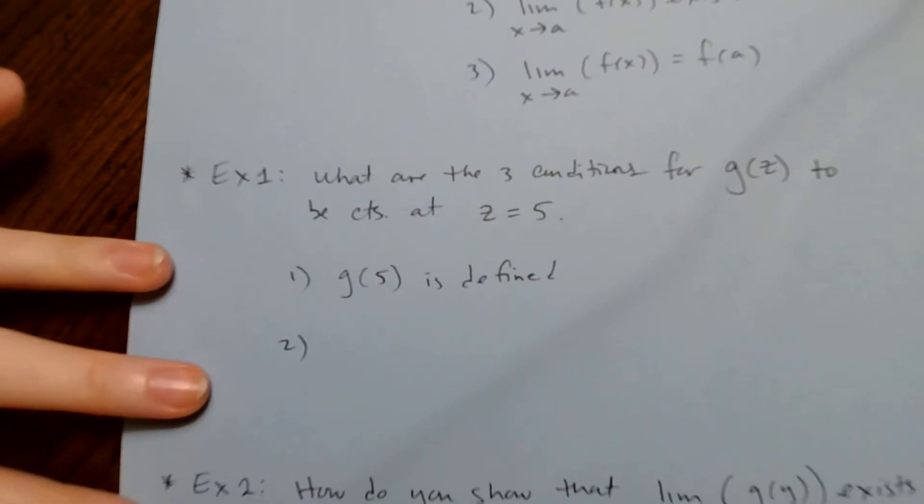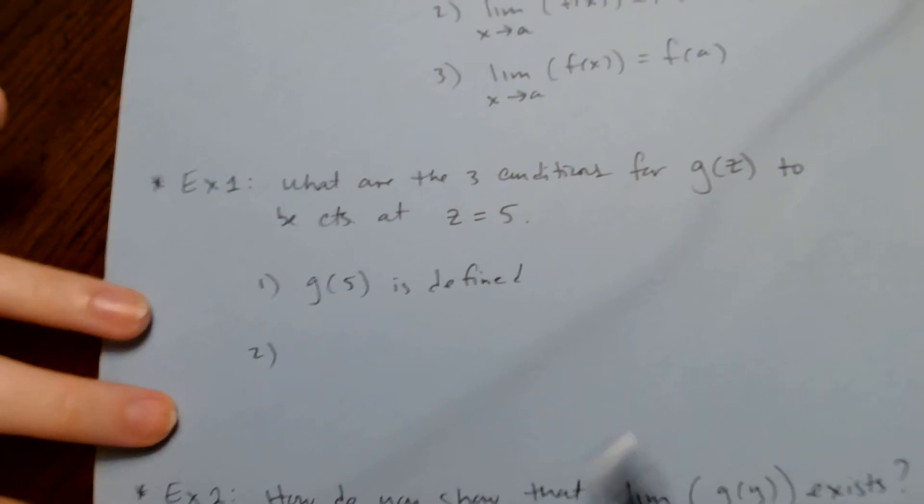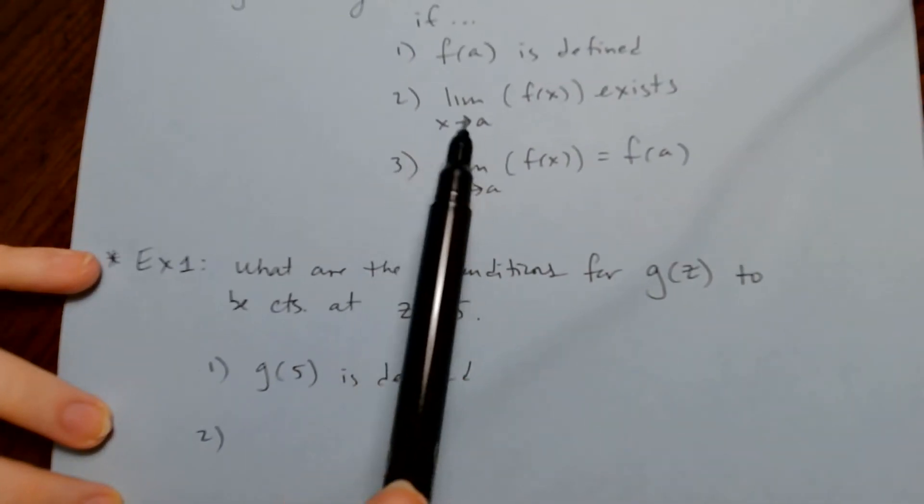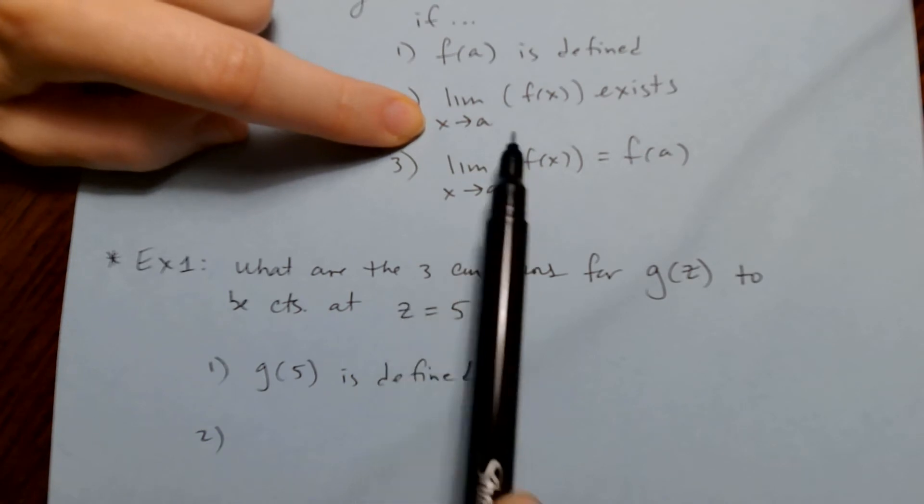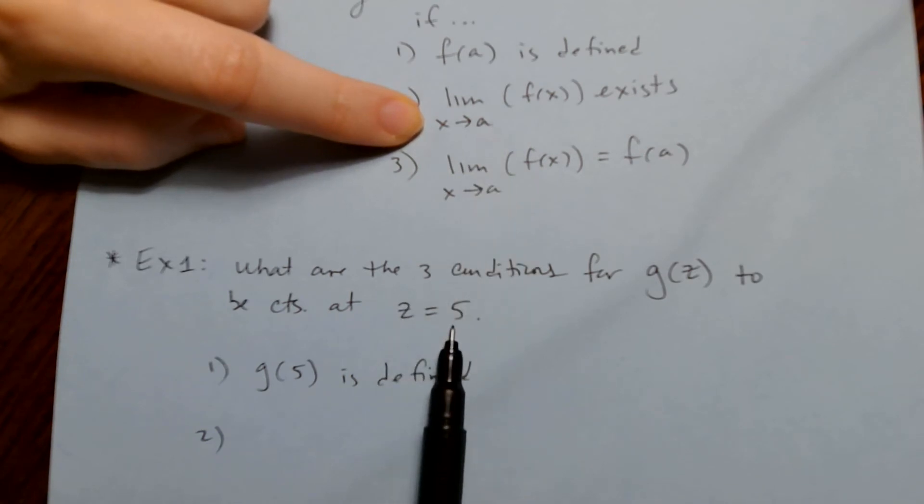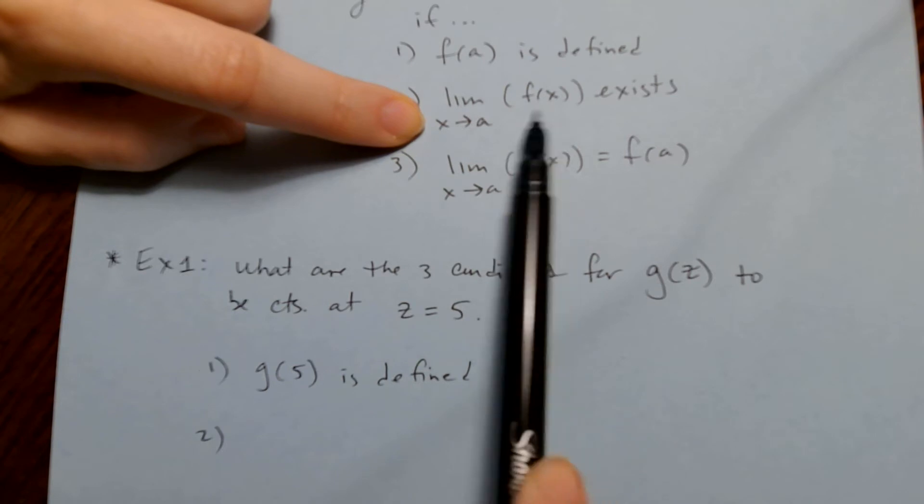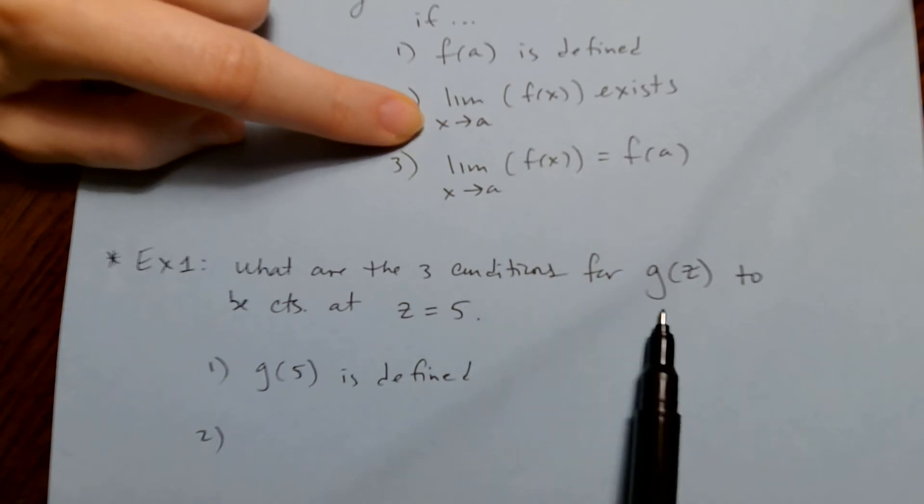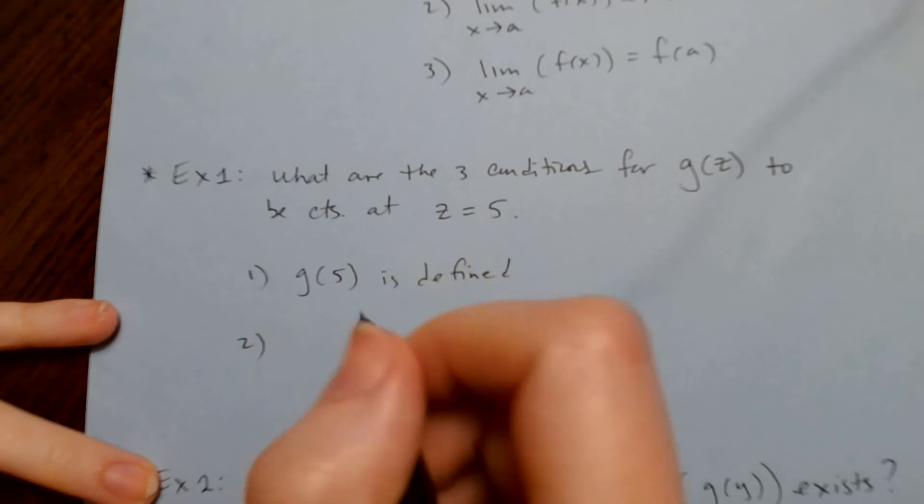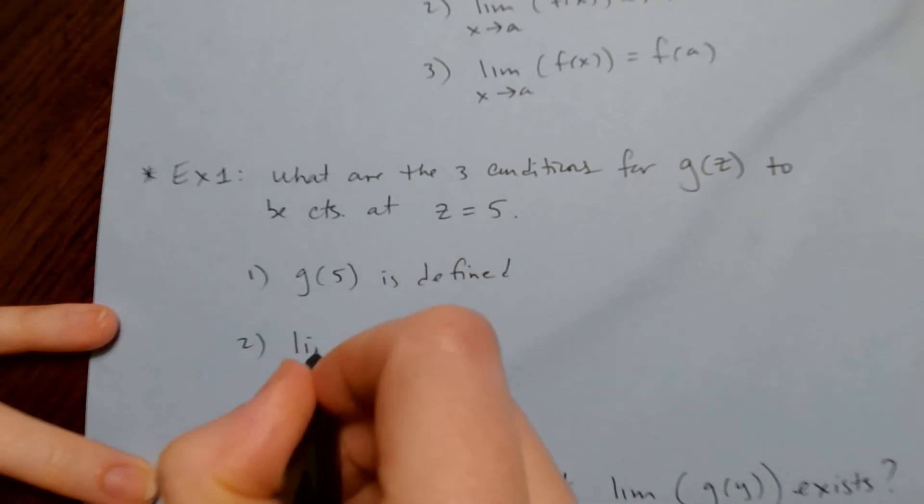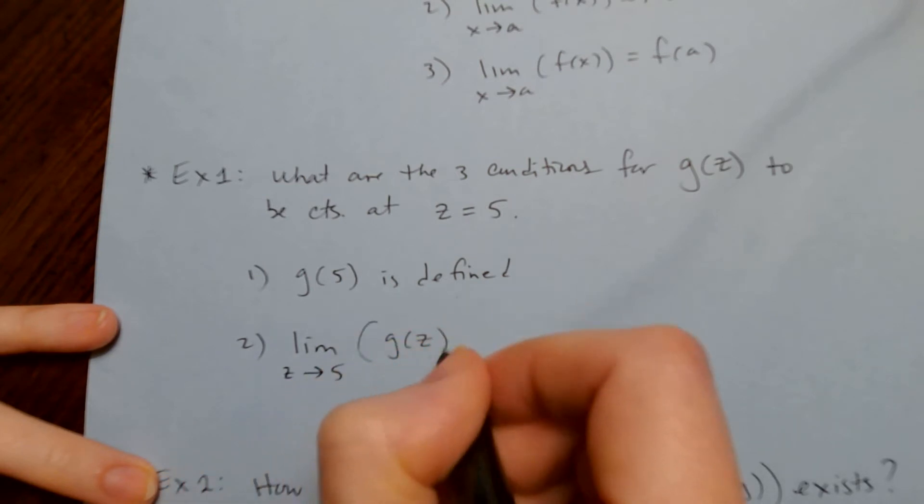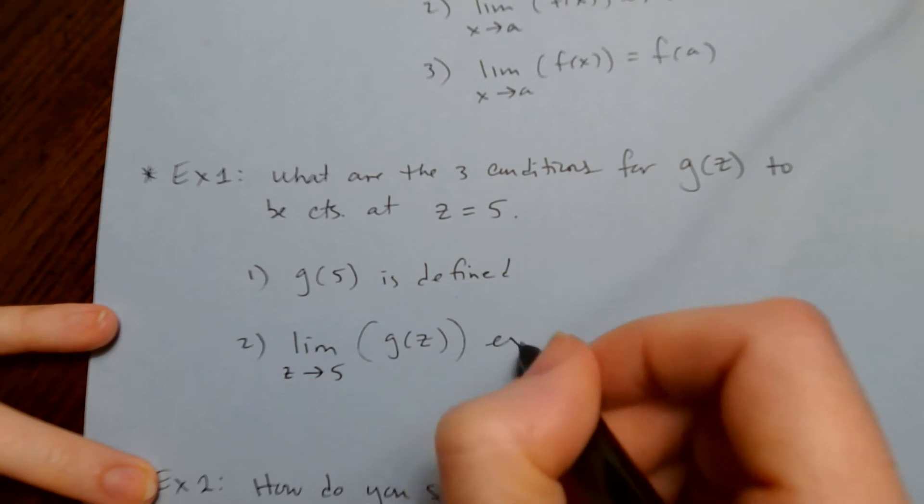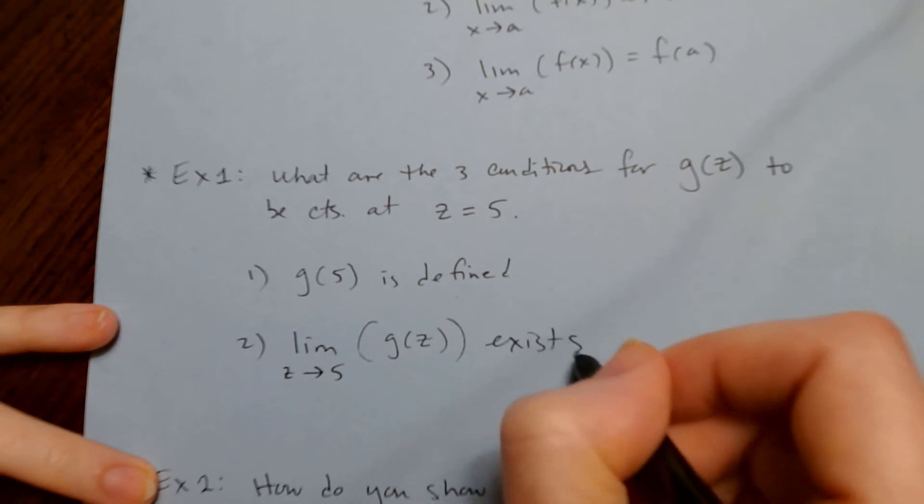Number two: this is where you need to be careful. Instead of x, I want z. Instead of a, I want 5. And instead of f(x), I want g(z). So I want the limit as z approaches 5 of g(z) to exist.